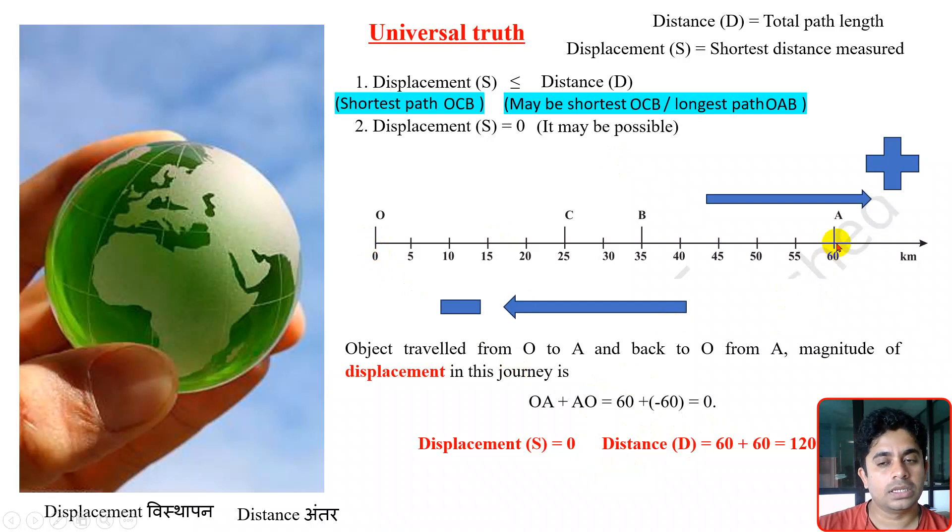O to A, what is the path length? 60. A to O, what is the path length? 60. So 60 plus 60 is 120. So here, this distance is a non-zero value. The distance value for this particular journey can never be zero.